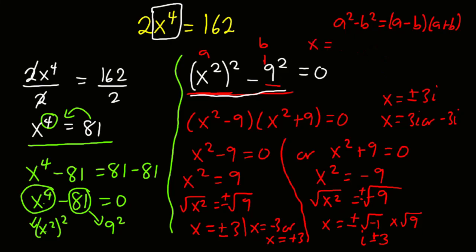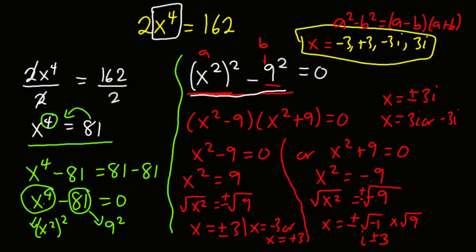Therefore the values of x are: x equals negative 3, positive 3, negative 3i, and positive 3i. Thank you for watching this video, and please don't forget to leave a comment or subscribe to this channel.